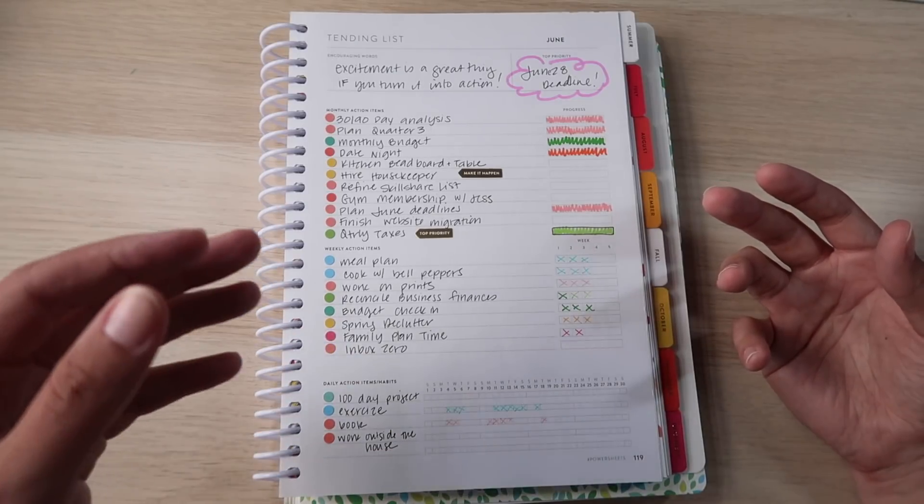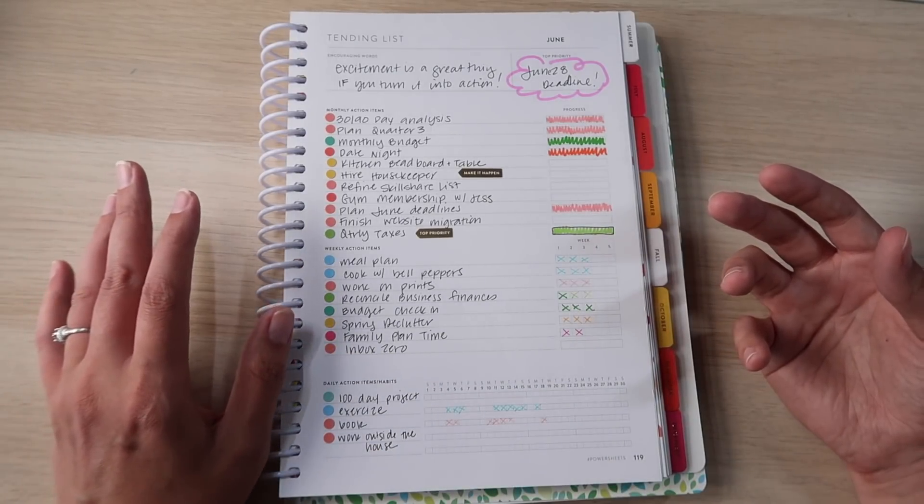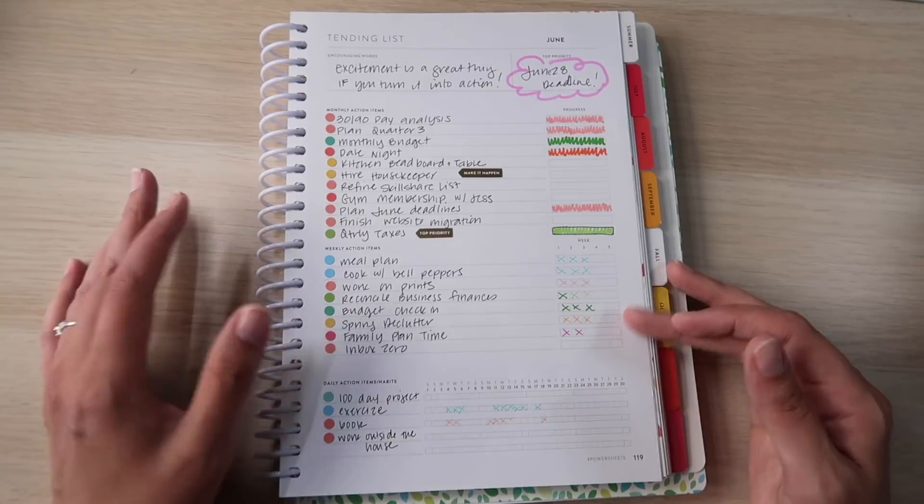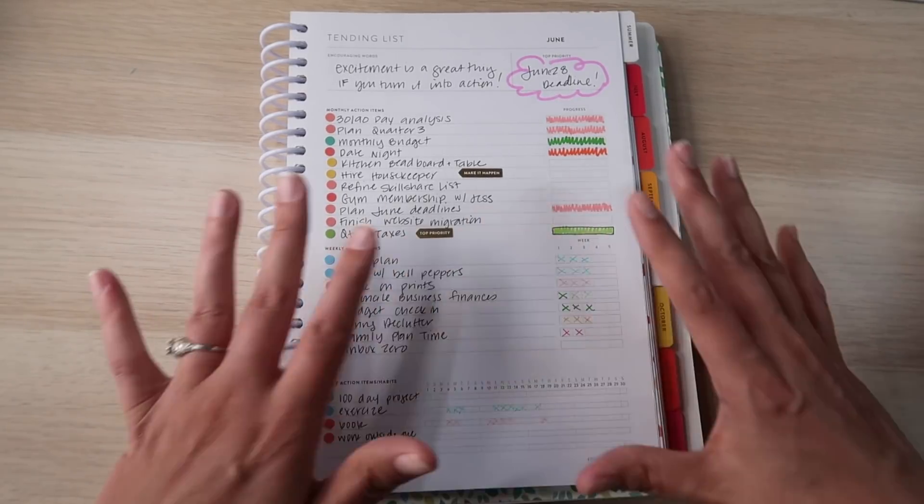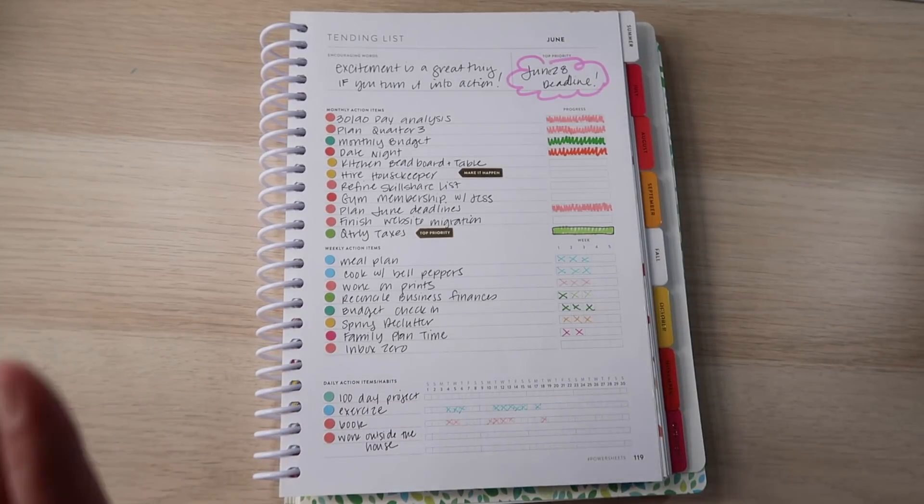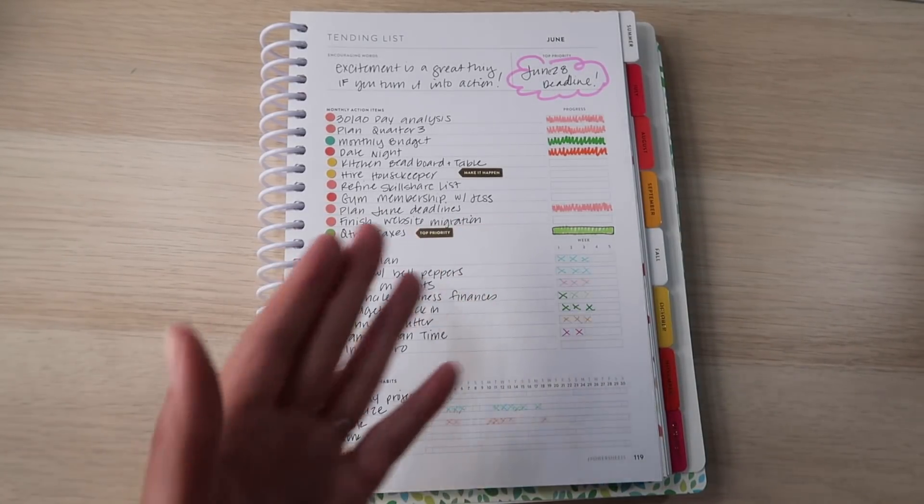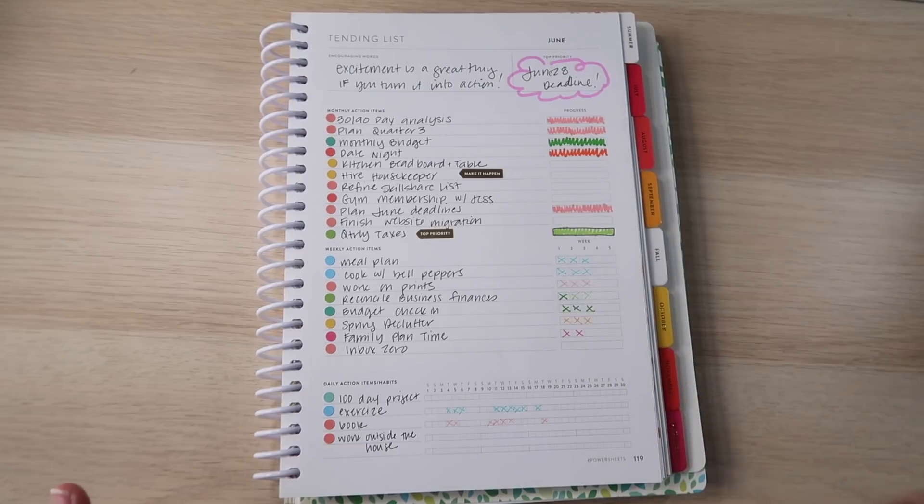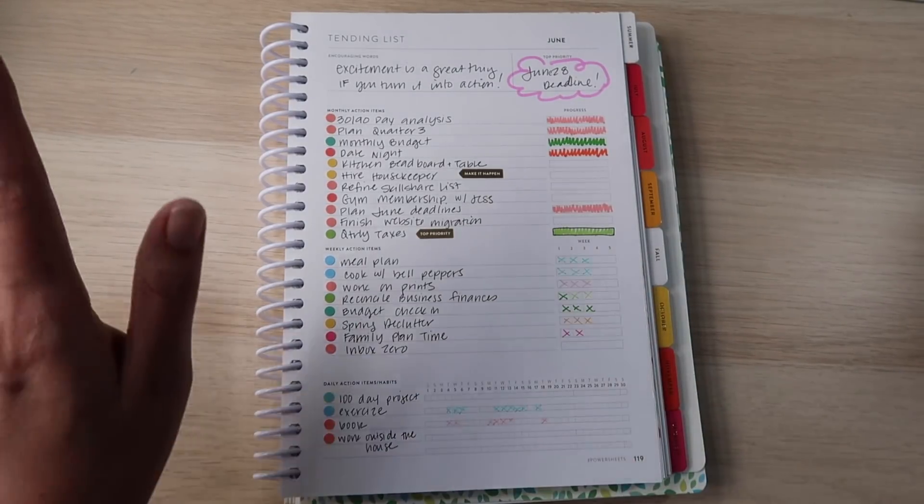So technically there is still a good third of June left, maybe a little less than a third. Looking at this though, even knowing I have that much time left in the month, I already can tell you I know things are not going to get done. It's funny. You look at this and I either had great success or absolutely didn't do anything. So let's take a look.